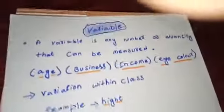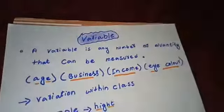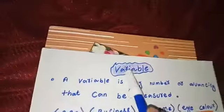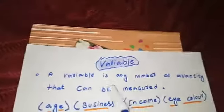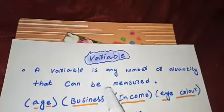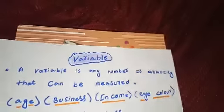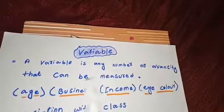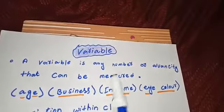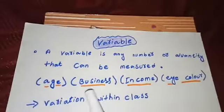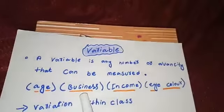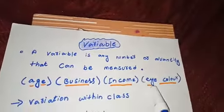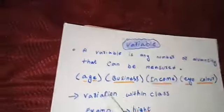Let's start with: what is a variable? A variable is any number or quantity that can be measured. Examples include your age, your business income, and eye color.